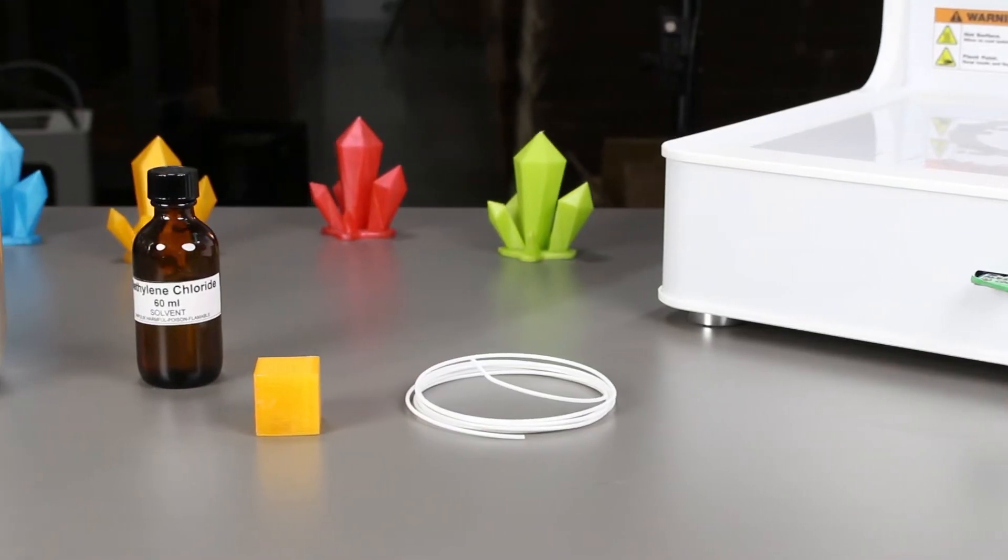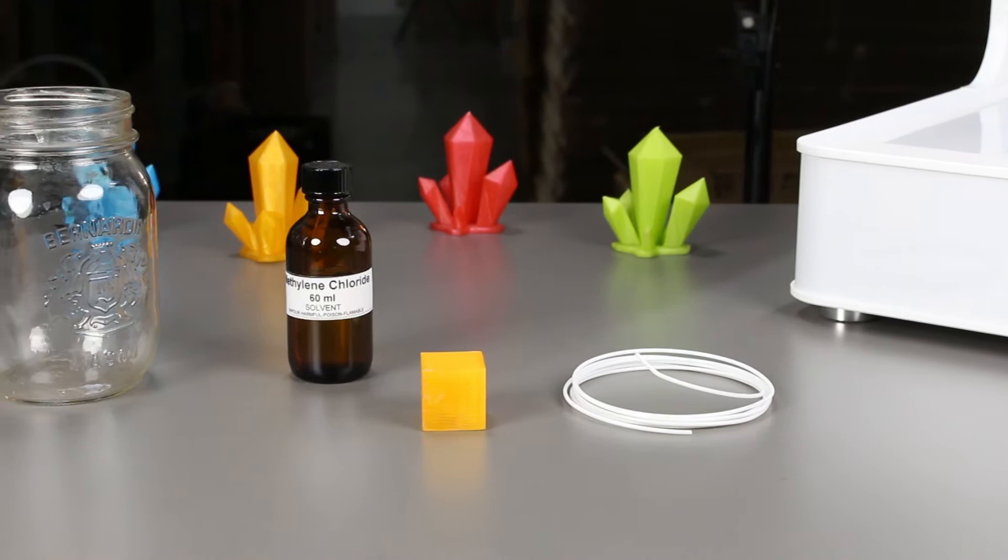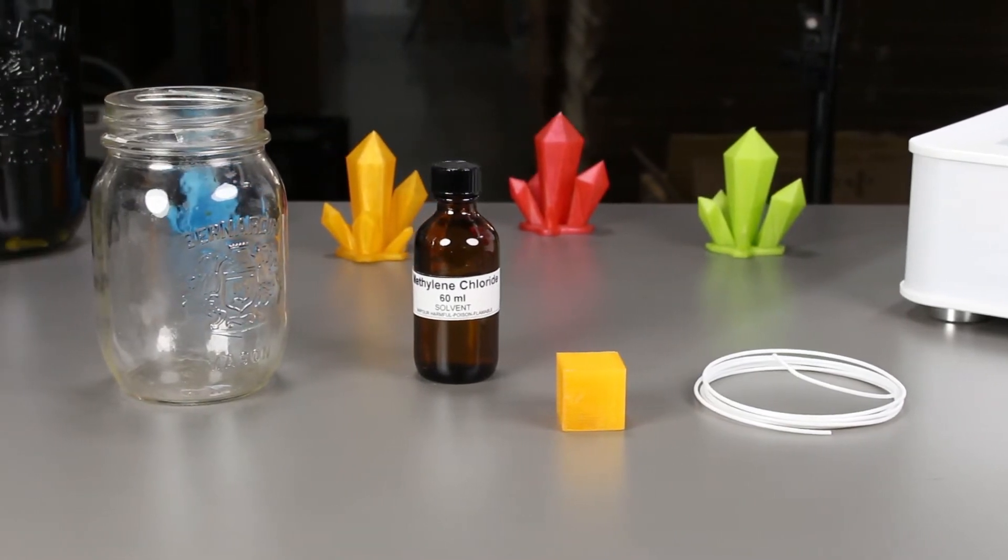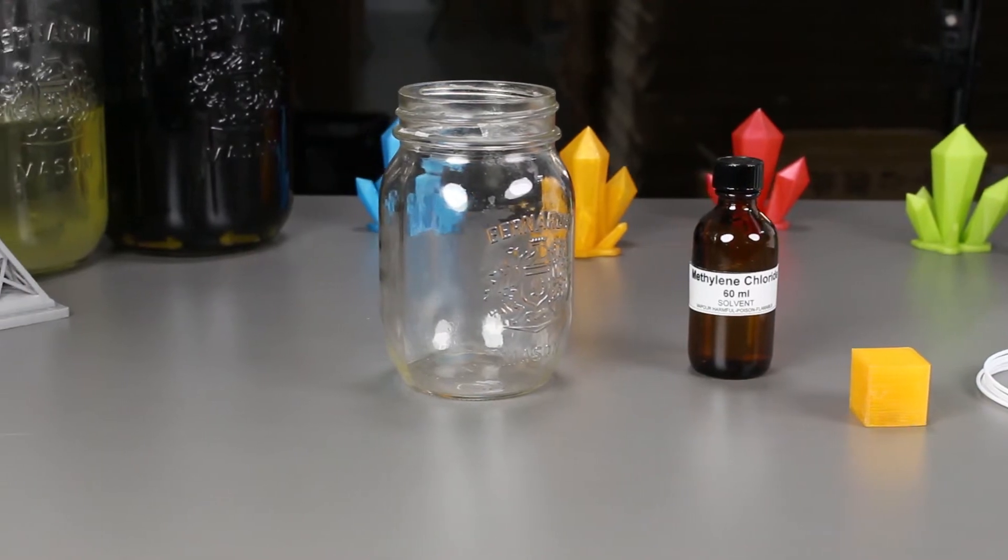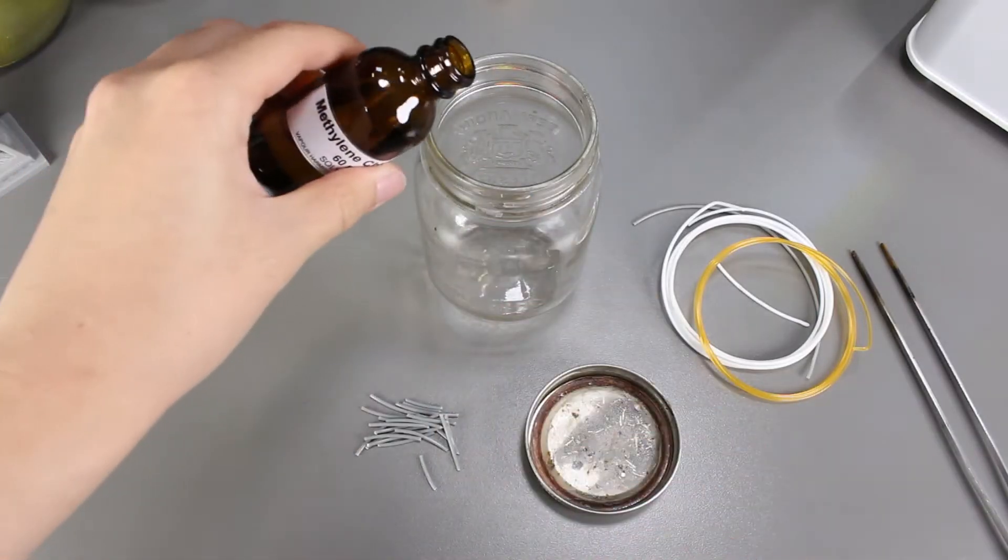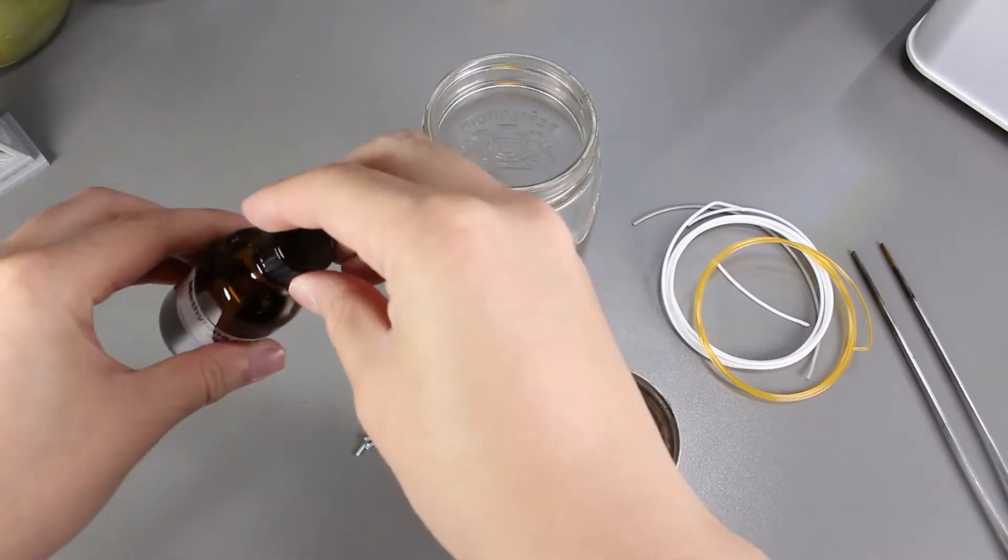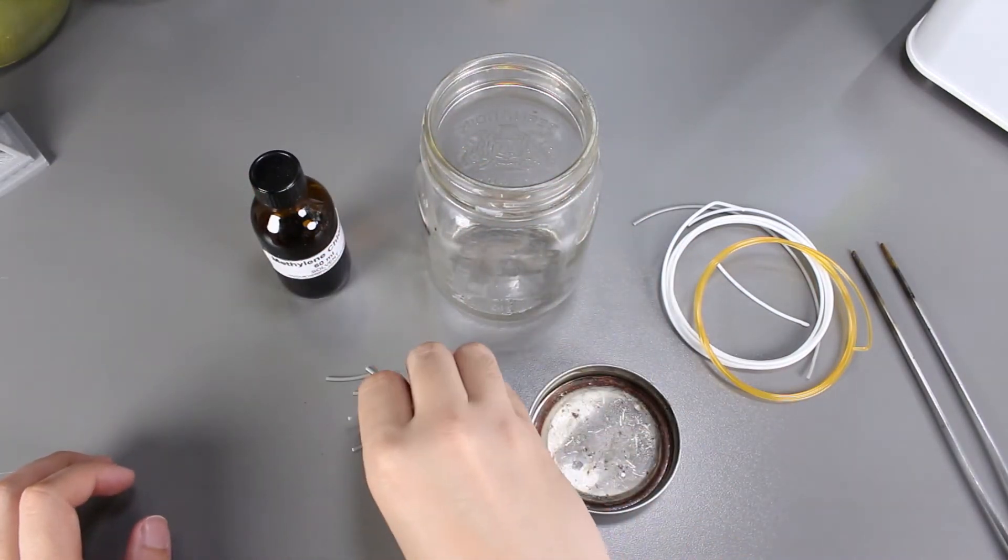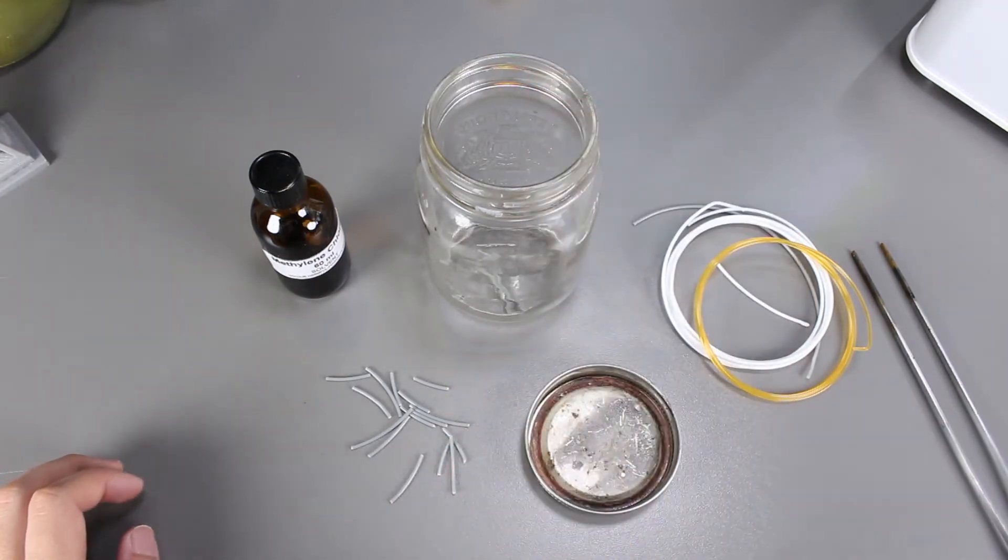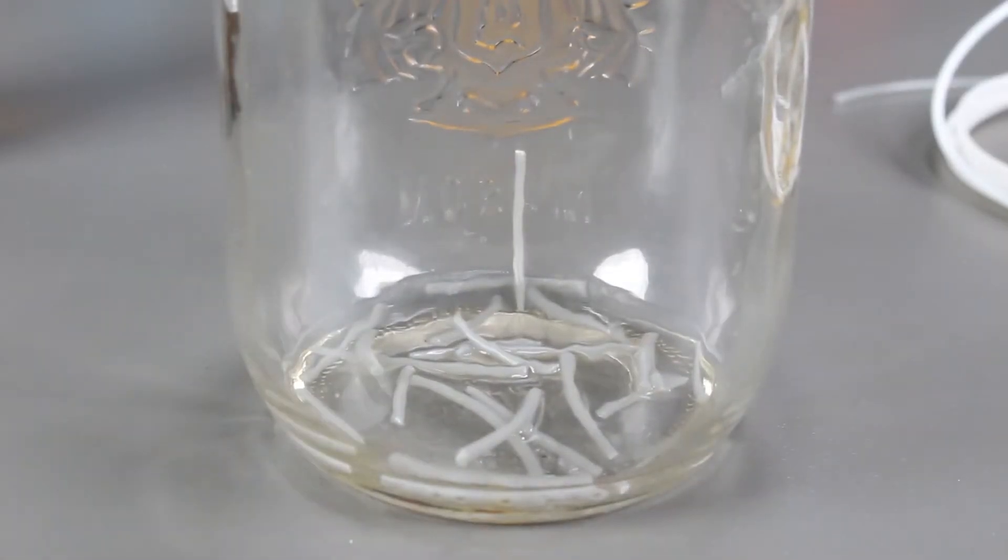To start the experiment, we first have to obtain some PLA and then some methylene chloride. We are going to venture into unknown territory now, so I have no idea how this will turn out. Let's pour some methylene chloride into the mason jar and then we'll put pieces of PLA into it, mix it, and then wait for the PLA to melt until it turns into a paste-like substance.